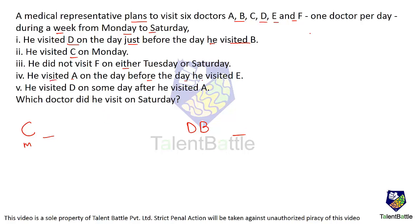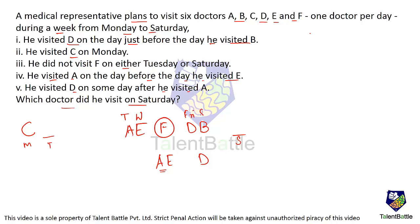He visited A on the day before he visited E, so A must come just before E. He visited D on some day after he visited A, so D must come after the pair A, E. Now, which doctor did he visit on Saturday? Five are already placed, the sixth is F, but F cannot be on Tuesday or Saturday. A possible scenario: A comes on Tuesday, E on Wednesday, F on Thursday, D on Friday, and B on Saturday. Since F cannot be at the end, D and B must follow A, and B must come on Saturday. The answer is B.